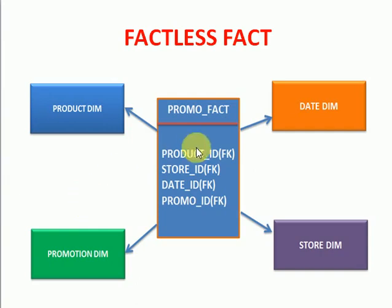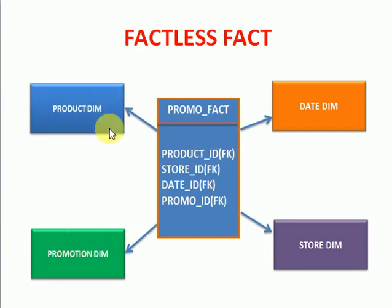But in your requirement you don't have any measured data — that is the fact data. But if you want to design your star schema, what we can do is create a fact table without measures, only containing foreign keys about your dimension tables. If you look at this diagram, I have four dimensions: product dimension, promotion dimension, store dimension, and date dimension.